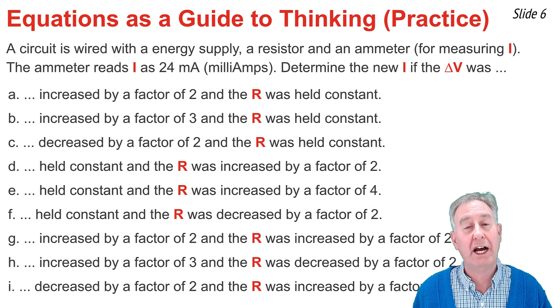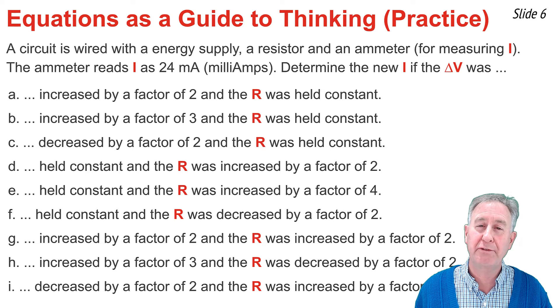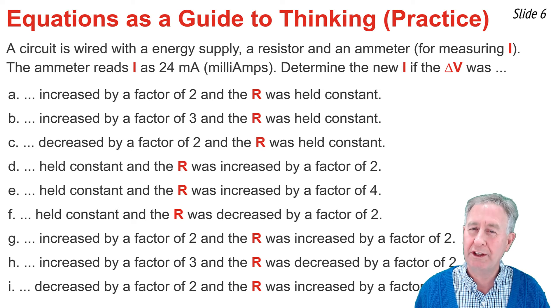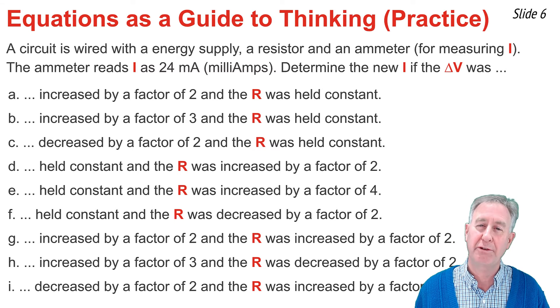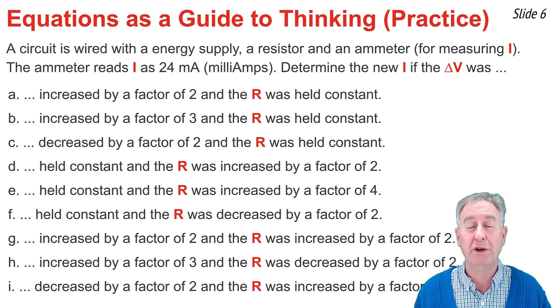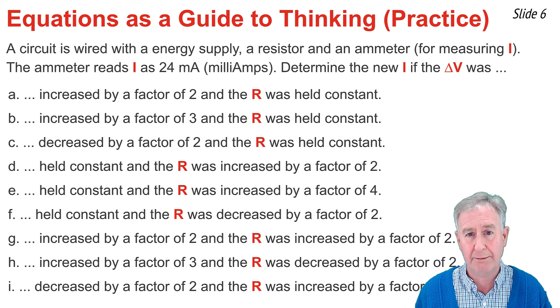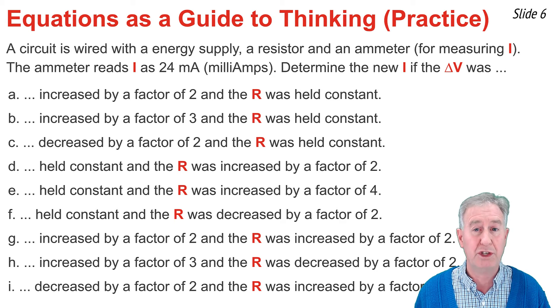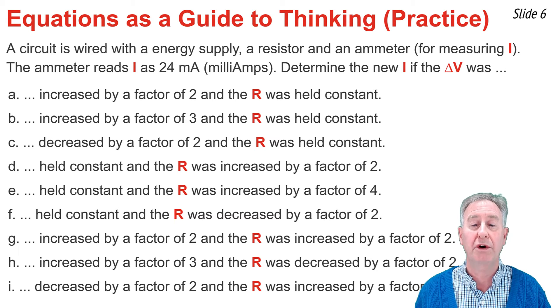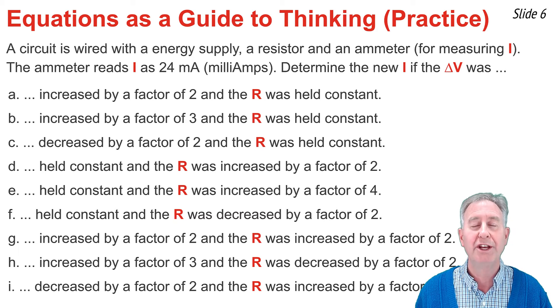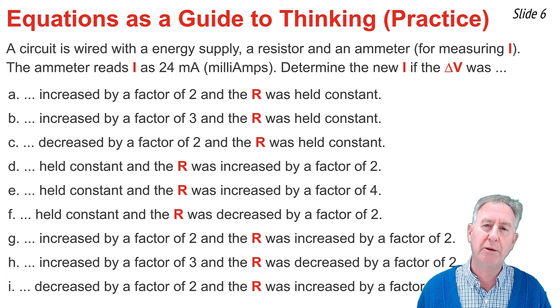Now let's discuss how you would use the I equals delta V divided by R equation as a guide to thinking about how a change in one of the variables, delta V or R, would affect the other variable, I. We have a circuit wired with an energy supply, resistor, and an ammeter. We notice the current is 24 milliamps. We want to determine the new current if delta V or R is changed.